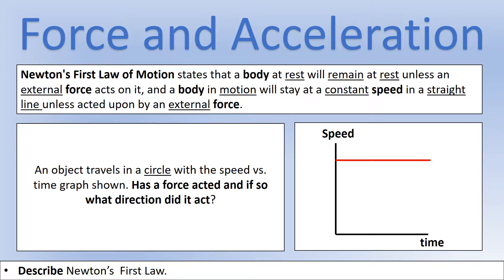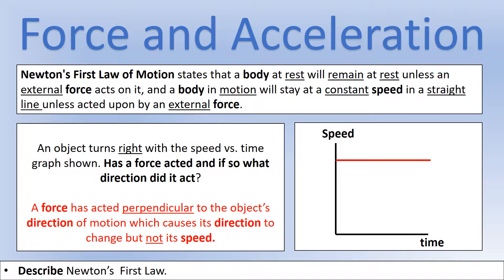Next scenario: an object traveling in a circle with the speed versus time graph shown. Has a force acted, and if so, what direction? This one might surprise you — yes, there has been a force, because if the object is traveling in a circle its direction is changing. But because the speed stays constant, the force must have acted perpendicular to the object's direction of motion, because it only changes the direction, not the speed.